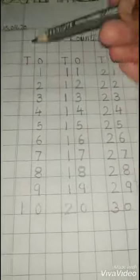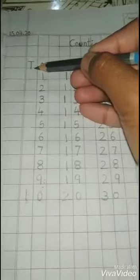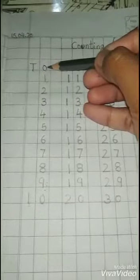Today you will learn how to write counting at the place of ones and tens. Here O stands for ones and T stands for tens.